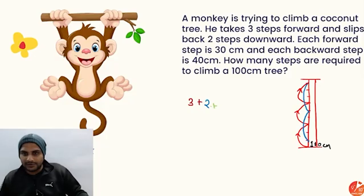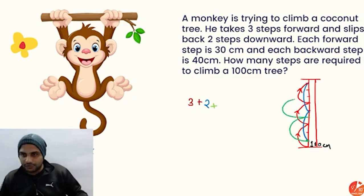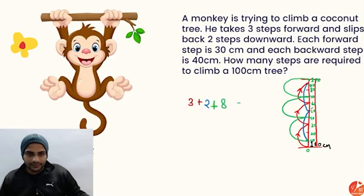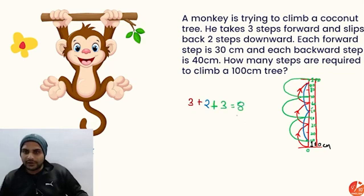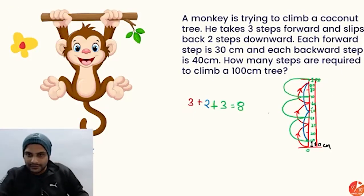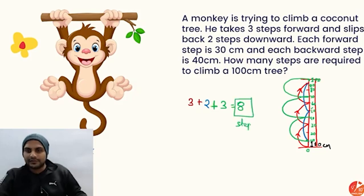From a position near the top, the monkey takes three more forward steps — one, two, three — and reaches 100 centimeters. So in eight total steps he reaches the top. Once you reach the top, you don't come back down. The answer often given as 50 steps is incorrect; the correct answer is eight steps.